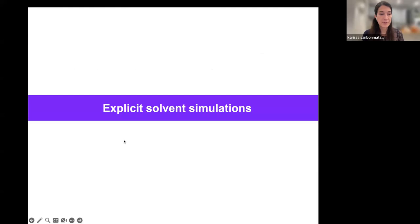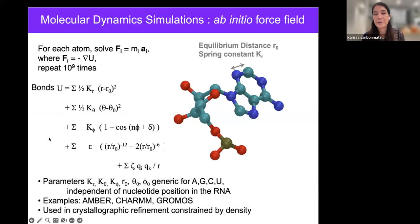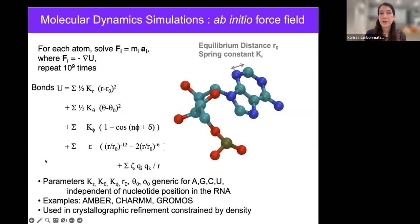So first I will discuss explicit solvent simulations. Many of you have seen these kinds of force fields. I'm putting up this slide and the potential to contrast it when I go to the native contact potential — it's parallel to this, but with some important differences. As everyone knows, we have our typical bond, angle, dihedral, Lennard-Jones, and Coulomb terms.